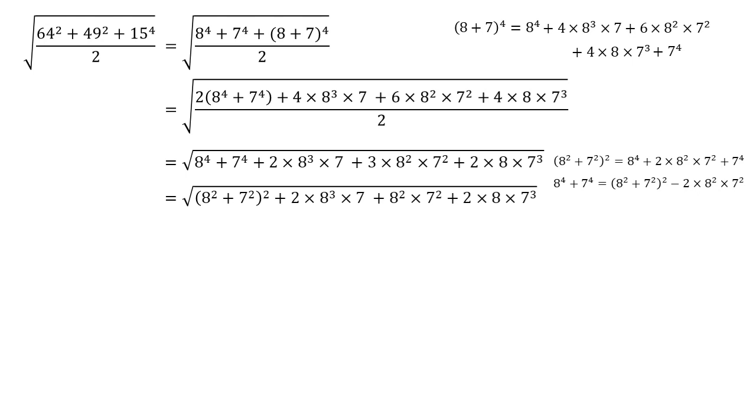Now, if we look at the second and fourth terms, these have both got 2, 8 and 7 as factors. So let's factorize those out. So the second and fourth terms now become 2 times 8 times 7 times by brackets 8 squared for the second term, 7 squared for the fourth term.